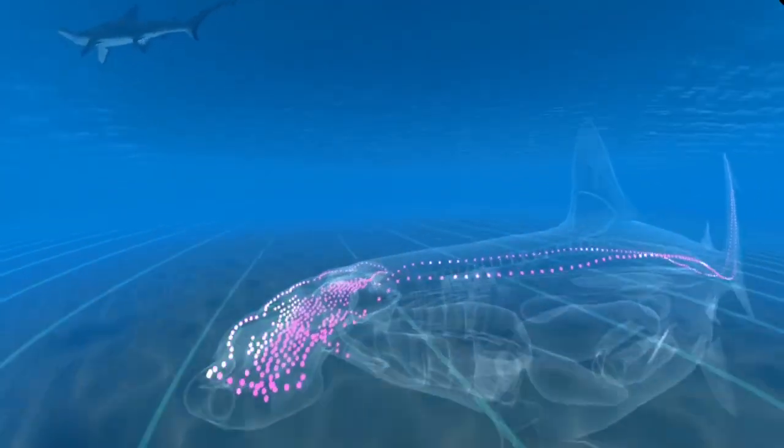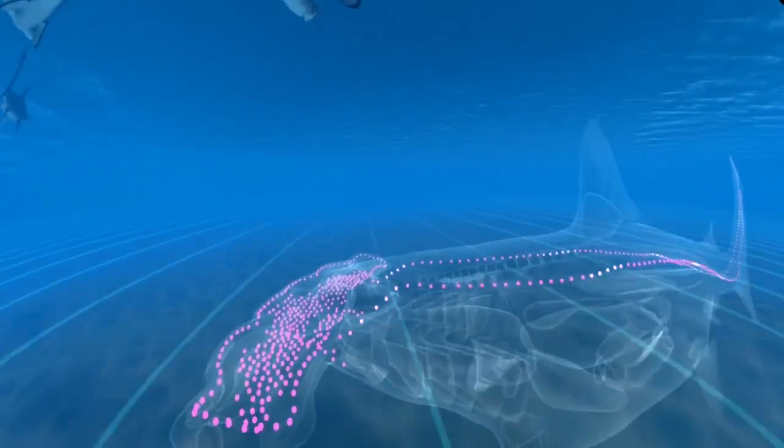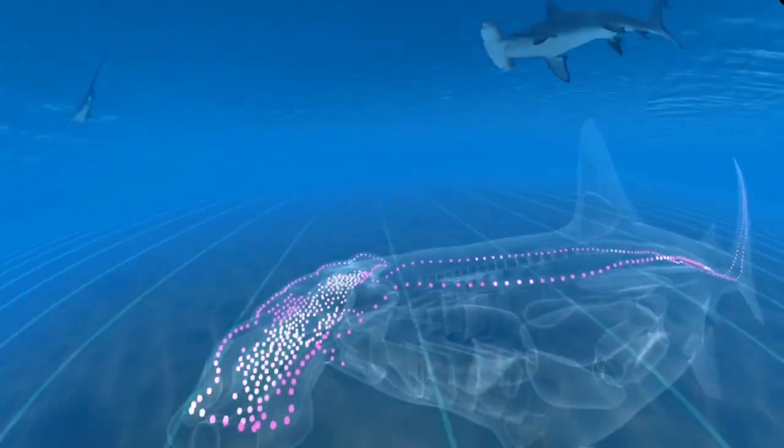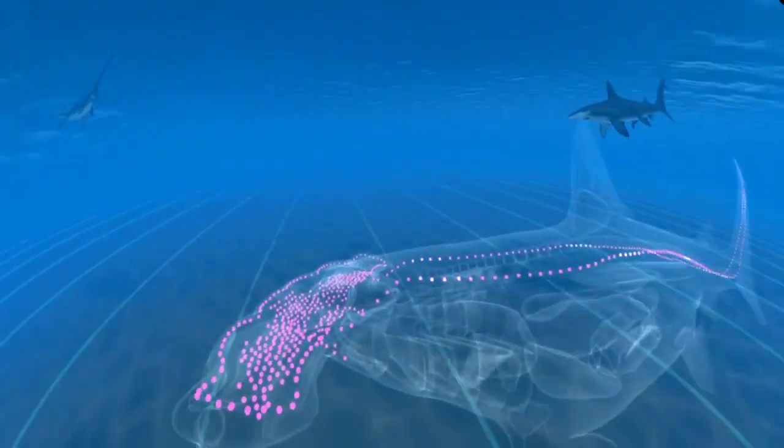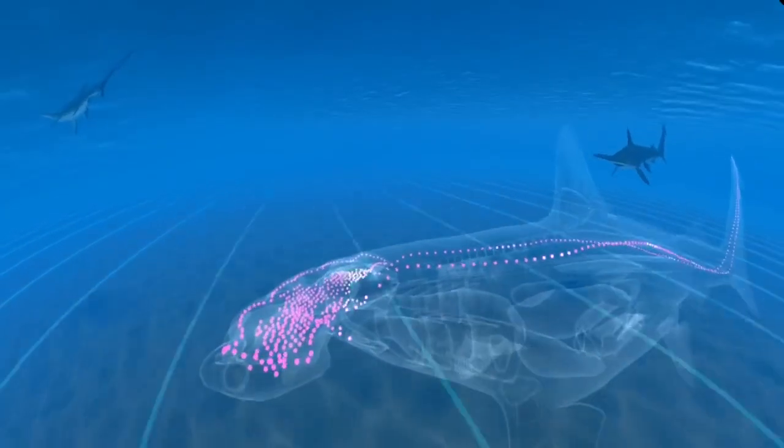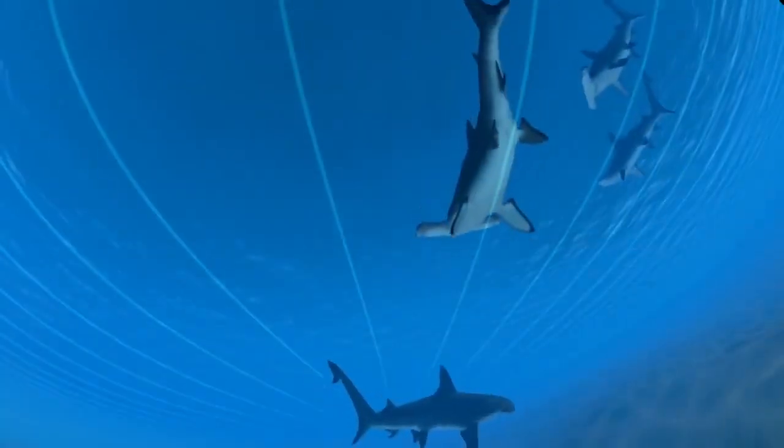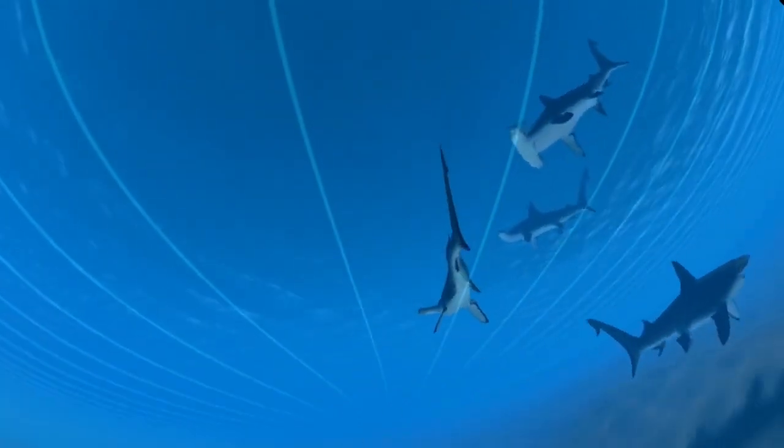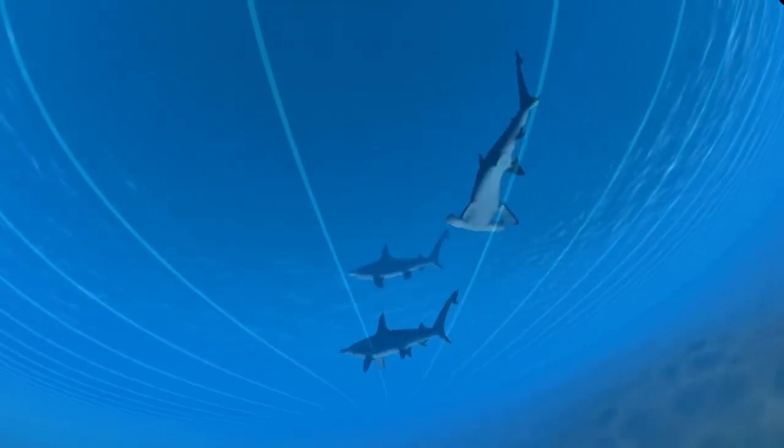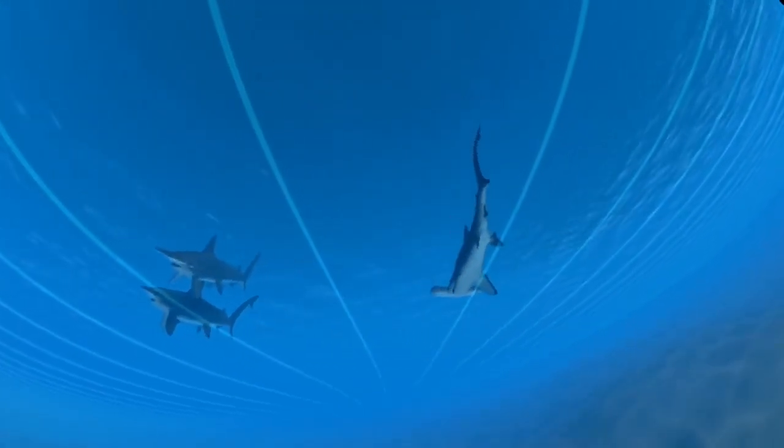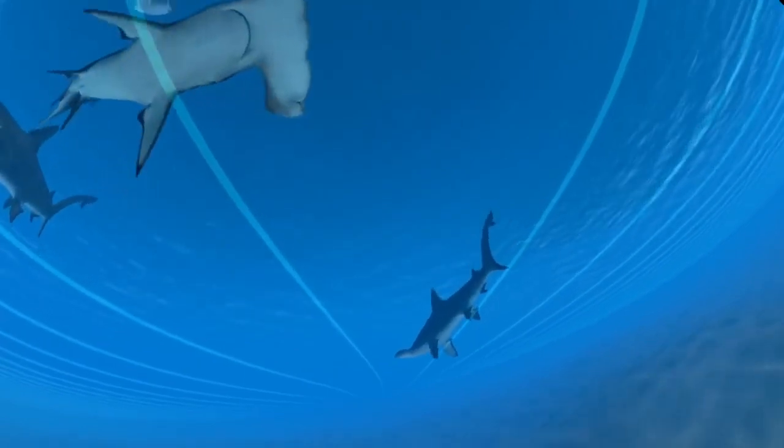Hammerhead sharks have special gel-filled organs called the ampullae of Lorenzini, which detect electric fields, both natural fields and those created from swimming across magnetic fields. Sensitivity to magnetic fields helps sharks and other fish swim in straight lines across the open ocean.